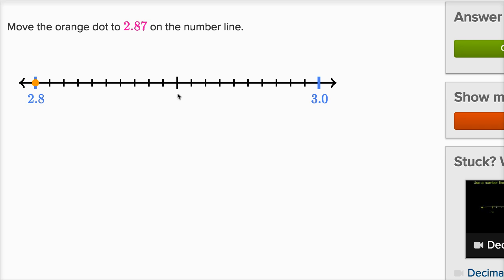And so 2.87, this is just like we saw in the last example. Each of these is a hundredth. So this is 2.8, this would be 2.81, 2.82, 2.83, 2.84, 2.85, 2.86, 2.87.